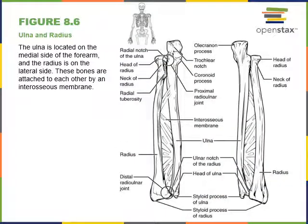Here we see an illustration of the radius and ulna. They are held together by an interosseous membrane of dense fibrous connective tissue that allows a slight amount of mobility between the two bones. It's not a freely mobile joint, but it allows the radius to move across the ulna. As we turn our forearm in pronation and supination, the radius rolls along the ulna.